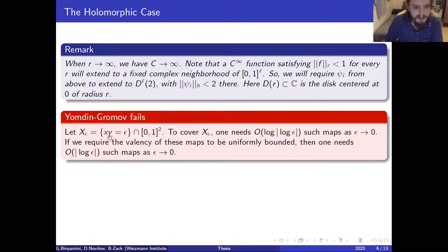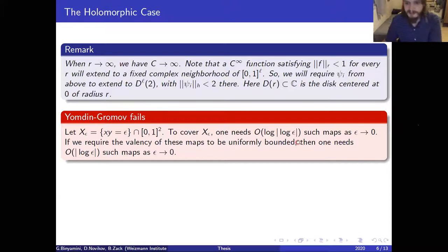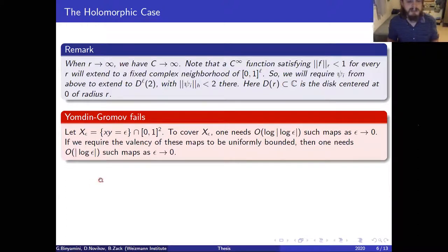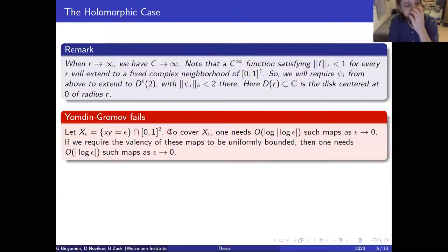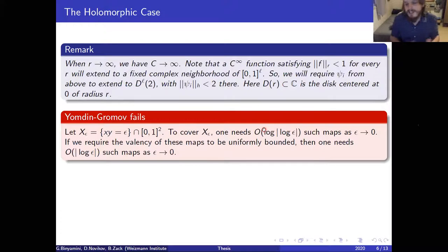Now let's look at a bad example: the family X_ε = {xy = ε}, the family of hyperbolas. Yomdin proved that to cover X_ε with maps satisfying the holomorphic parameterization condition, you need at least O(log log ε⁻¹) maps — a lower bound. Moreover, if we require the valency of these maps to be uniformly bounded, one needs even more: O(log ε⁻¹) maps. This shows that the constant in the holomorphic setting can depend on the geometry of X and the number of maps needed is not controlled by β, U, l alone.